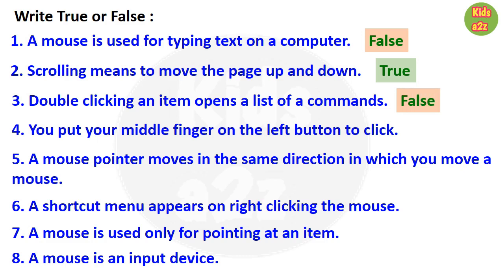Number 4: you put your middle finger on the left button to click — false. Number 5: a mouse pointer moves in the same direction in which you move a mouse — true. Question number 6: a shortcut menu appears on right clicking the mouse — true.